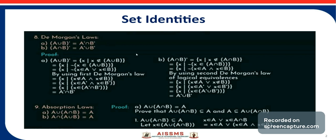Now consider the second De Morgan's law. (A intersection B) complement is the set of all X such that X does not belong to A intersection B. We can write 'X does not belong to A intersection B' as the negation of 'X belongs to A intersection B,' which means X belongs to A and X belongs to B.